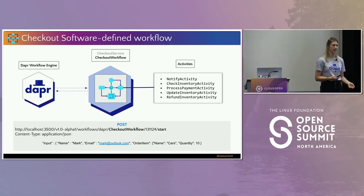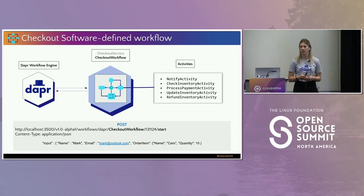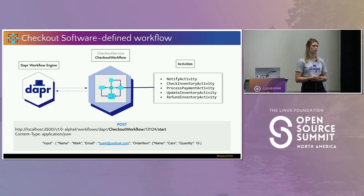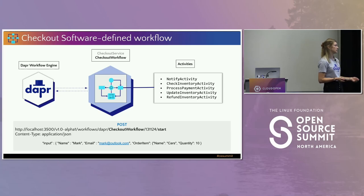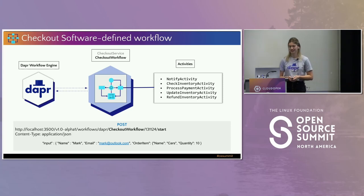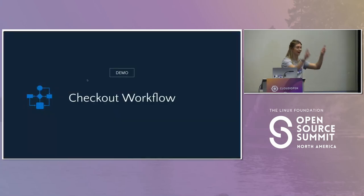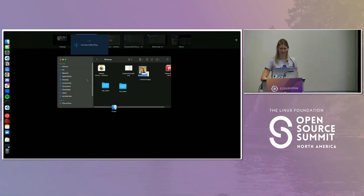This brings in compensating transactions — we'll talk about when a particular activity would fire versus when it would not. We're kicking off this workflow the same way as before, just changing the name from Hello World workflow to checkout workflow and passing in a new unique instance. The input will be more like an order payload: a name, an email, and a particular order item — think buying 50 tickets to KubeCon or 20 tickets to OSS Summit.